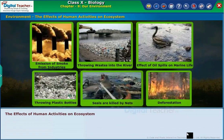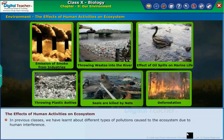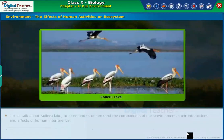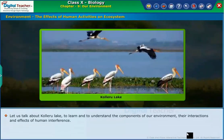Now, let us learn the effects of human activities on ecosystem. In previous classes, we have learned about different types of pollutions caused to the ecosystem due to human interference. Here, we shall try to understand the harmful effects on organisms at each trophic level caused due to cutting down the forests, polluting water sources and how this affects organisms of each trophic level. Let us talk about Kolaru Lake to learn and understand the components of our environment, their interactions and effects of human interference.